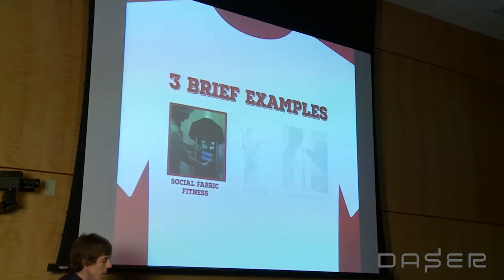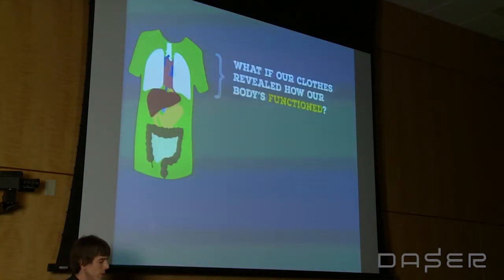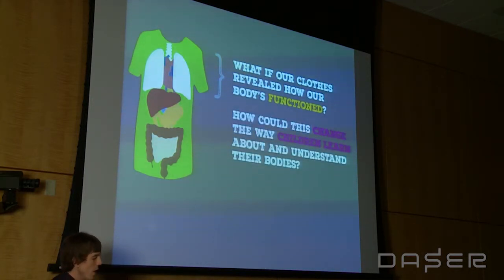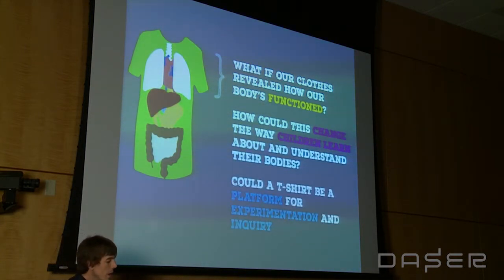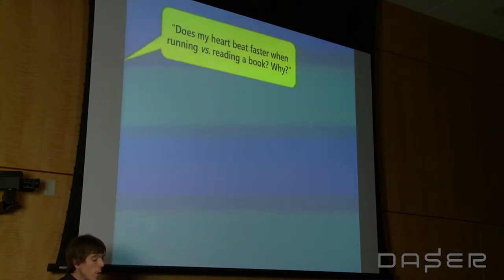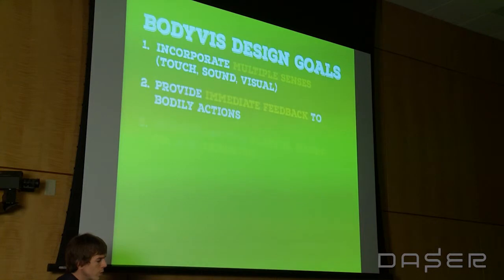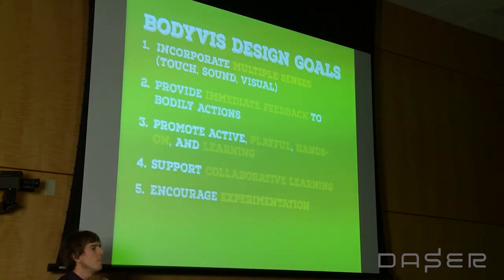Transitioning to Body Viz — quite a different project but still working with e-textiles. It came from what-if questions: what if our clothes revealed how our bodies functioned? How could this change the way children learn about and understand their bodies? Could a t-shirt be a platform for experimentation and inquiry? Imagine children asking: does my heart beat faster when I'm running versus reading a book, and why? How does my breathing rate compare to my classmates? How does food travel through my body? The focus is on immediate visualization through body movement.